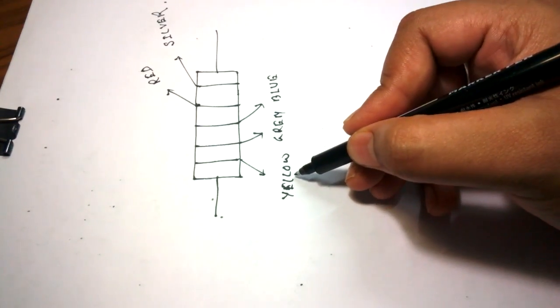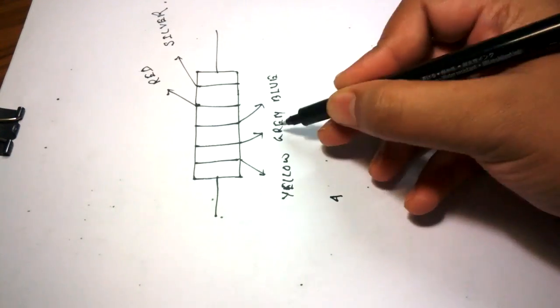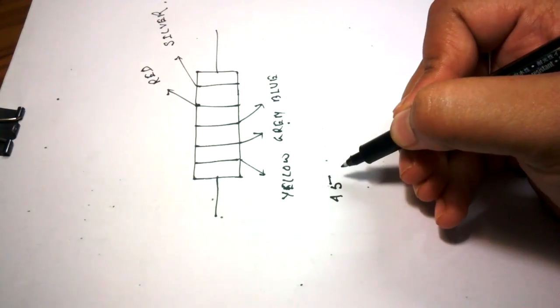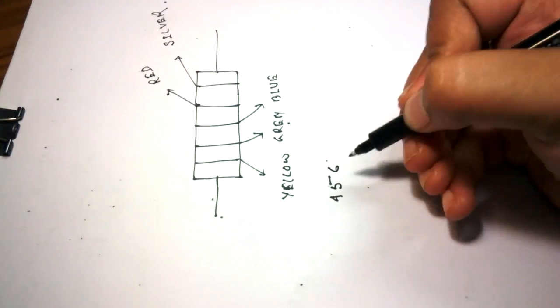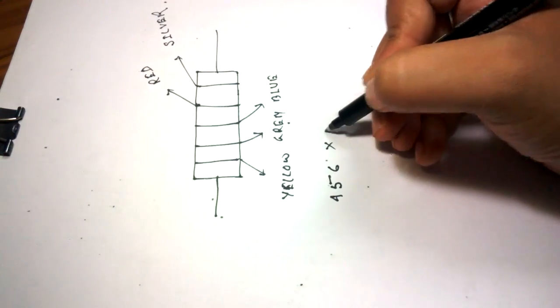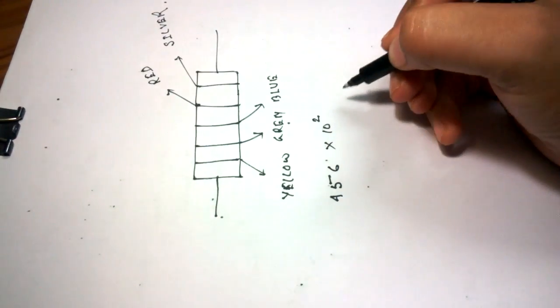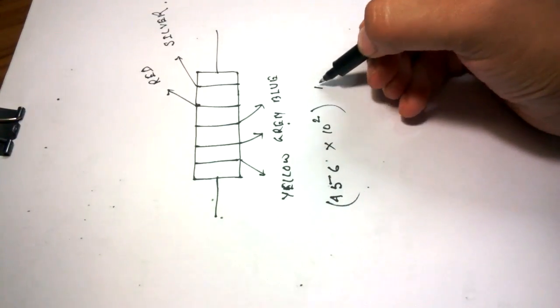So, first yellow, the value of the yellow is 4, green, the value of the green is 5, then blue, the value of blue is 6, now multiplies with red, that means 10 to the power of red, the value of red is 2, silver is 10 percent.